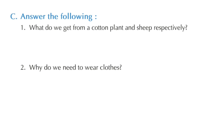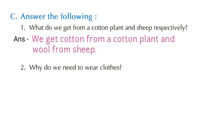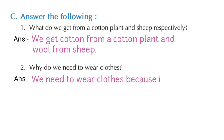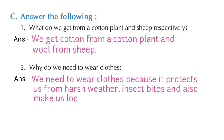Next, let's answer the following questions. Question one: what do we get from a cotton plant and sheep respectively? Answer: we get cotton from a cotton plant and wool from sheep. Question two: why do we need to wear clothes? Answer: we need to wear clothes because it protects us from harsh weather, insect bites, and also makes us look smart.